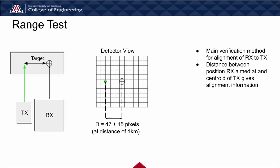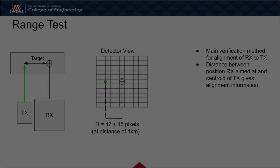To verify the alignment accomplished using the LTHR, a range test is used. By hitting a target at a known distance away from the system, the angular deviance of the TX relative to the RX can be quantified by measuring the distance between where the receiver is aiming and where the beam hits the target. For a target placed one kilometer away, in order to meet the 10 arcsecond error condition, the beam should have a displacement of 47 plus or minus 15 pixels from the center of the detector.